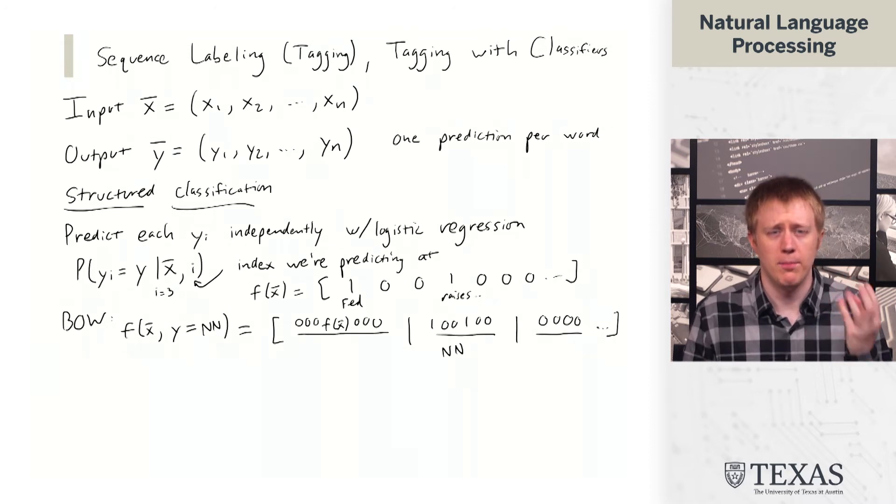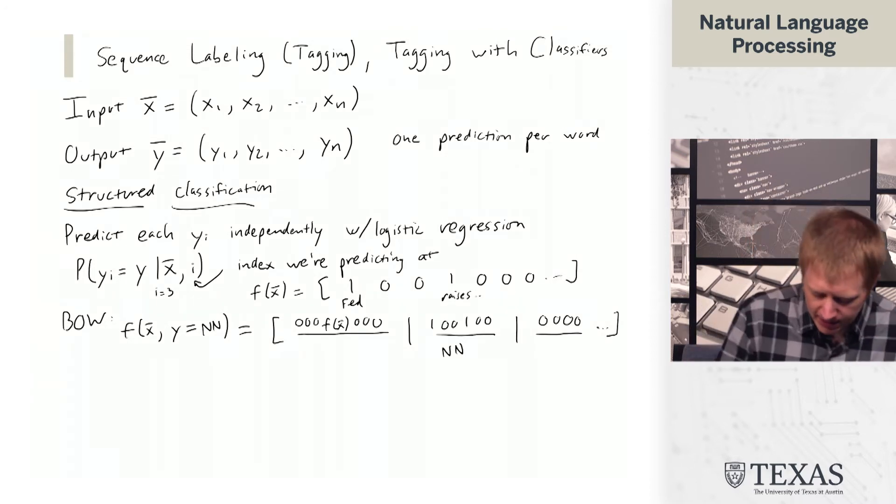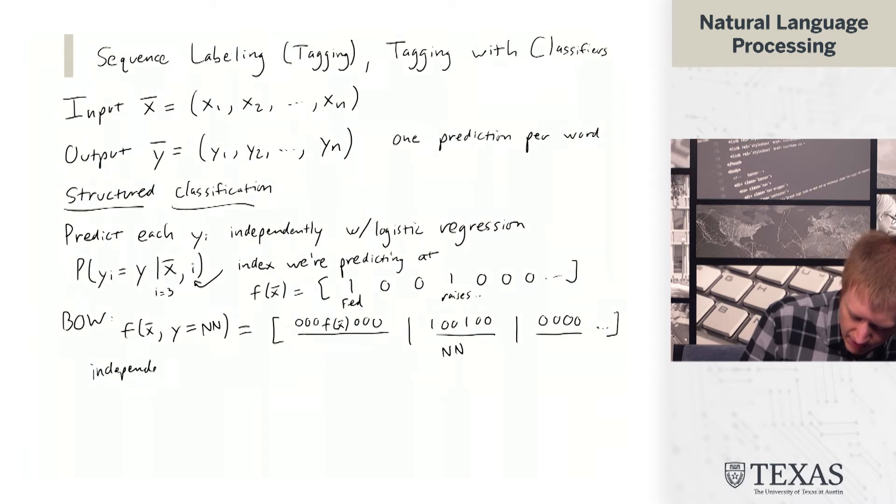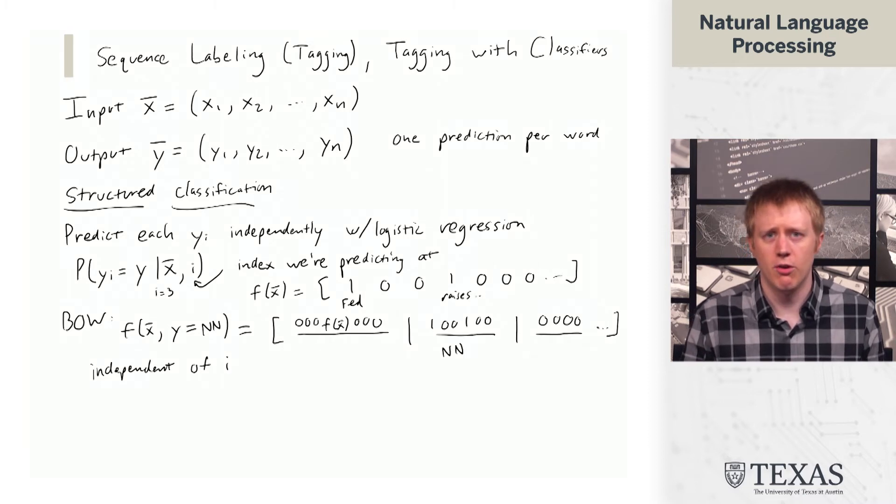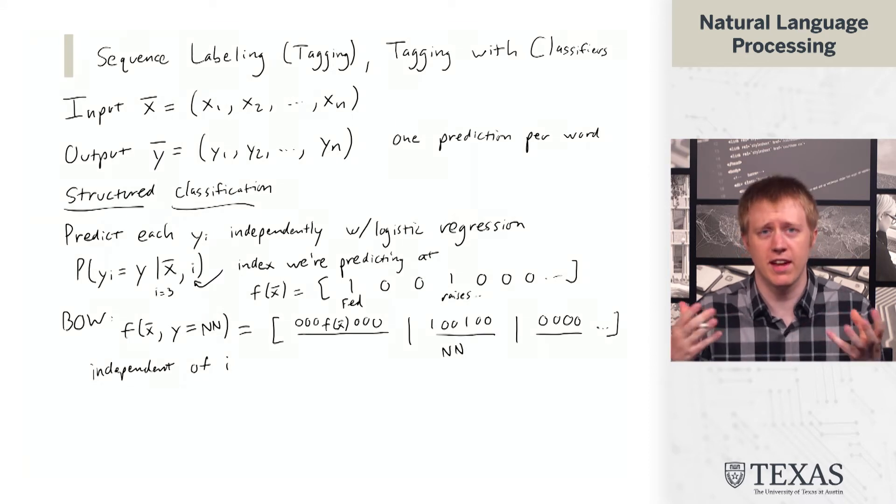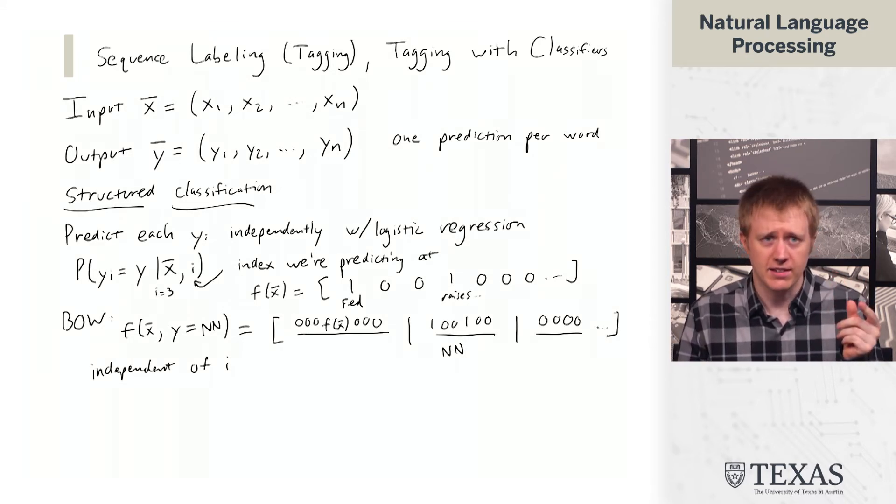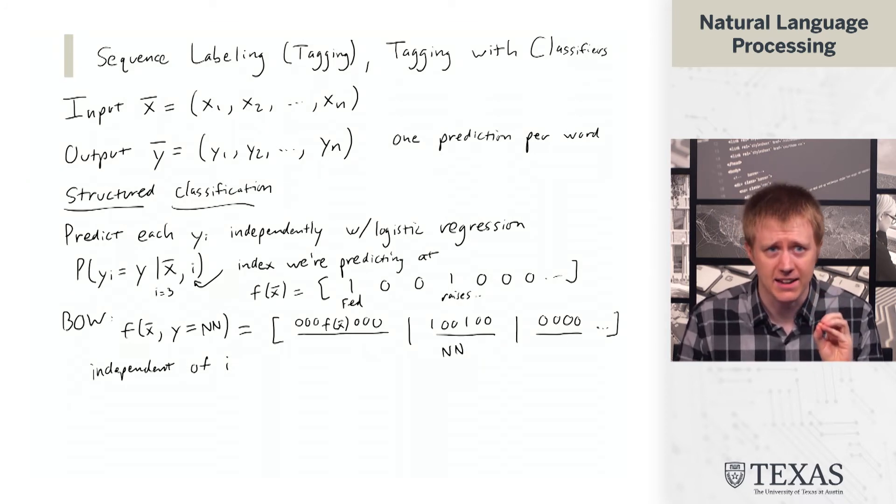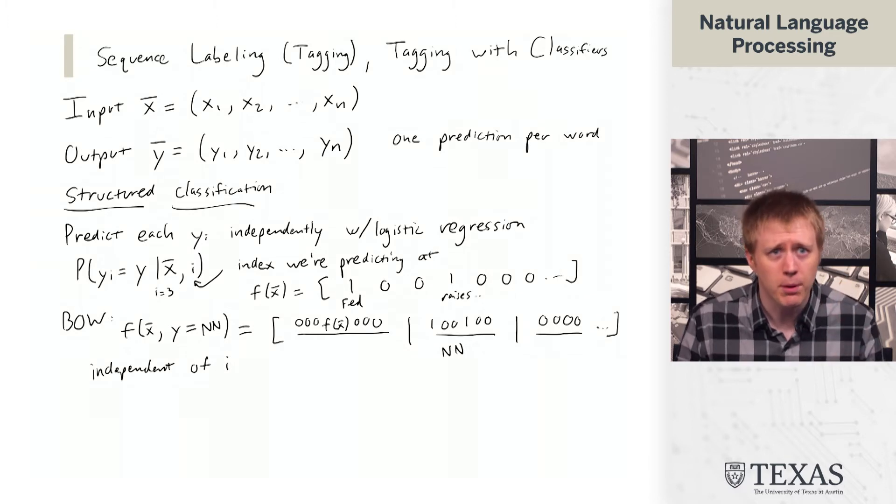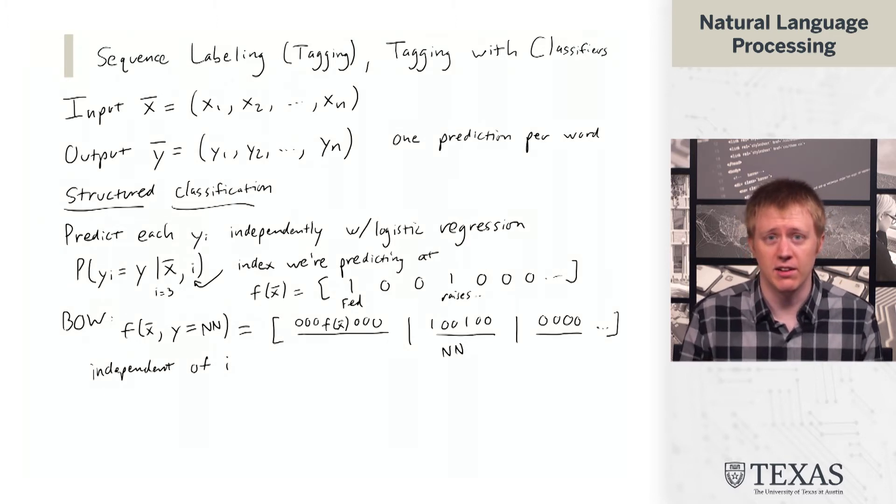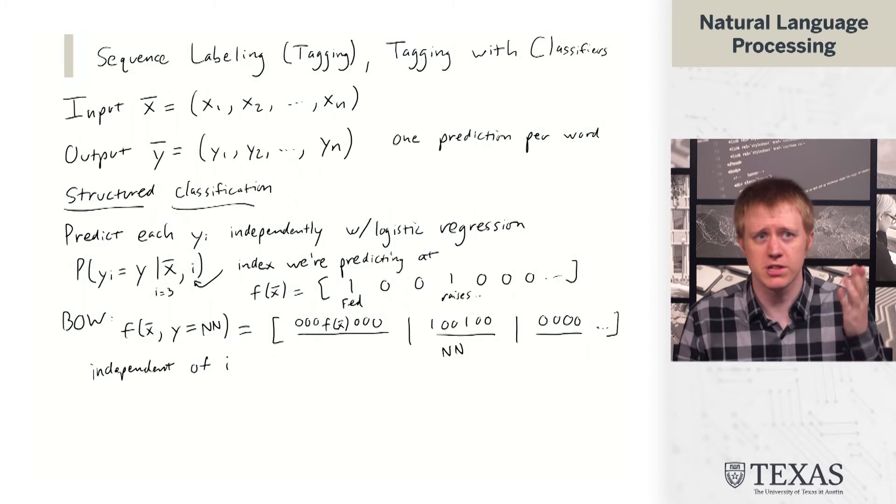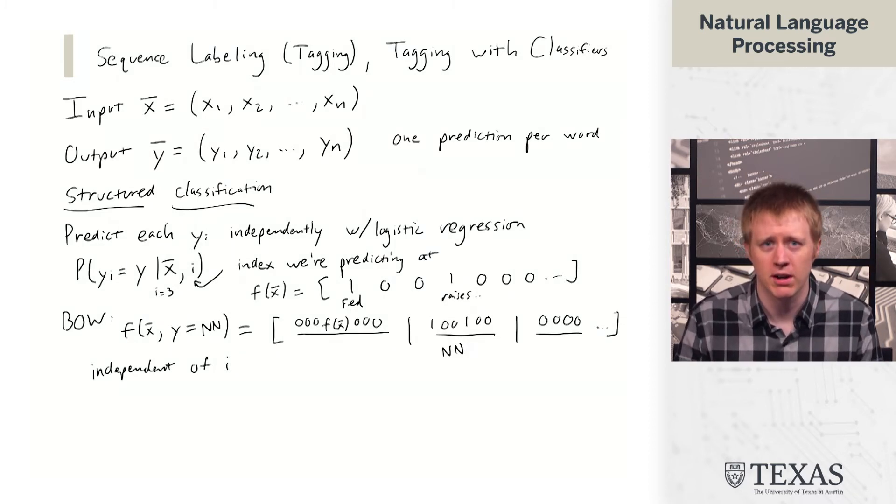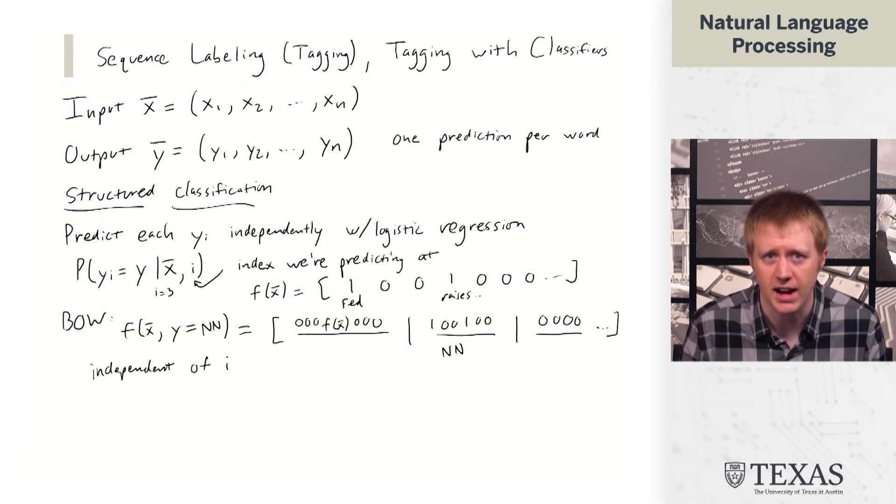Okay, the big problem from our perspective is that this is independent of i. So this model, or rather this set of extracted features, just looks at the sentence and the part of speech tag. It doesn't look at the word that we're actually trying to tag here. And so that's kind of a problem in that we're not making use of that information. We're just going to predict the same tag distribution everywhere, and this is generally not going to work as a tagging model.